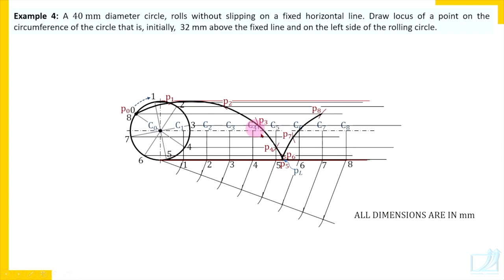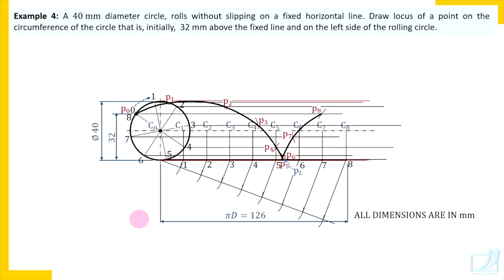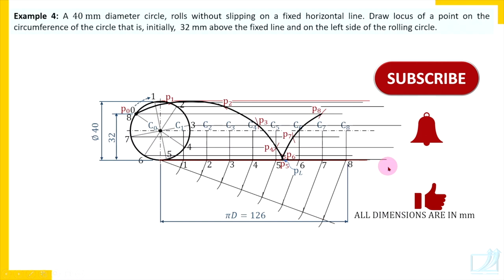This is the completed cycloid curve. Now insert all given dimensions: diameter is 40 millimeters, length pi*d, and the 32 millimeter distance showing the initial position of point P. Show the guiding line of length pi*d and the rolling circle in its initial position, along with the curve. Only these three details in the diagram must be thick: the guiding line, the rolling circle, and the curve. All other lines are thin lines, faint lines, or construction lines, including all dimension lines.